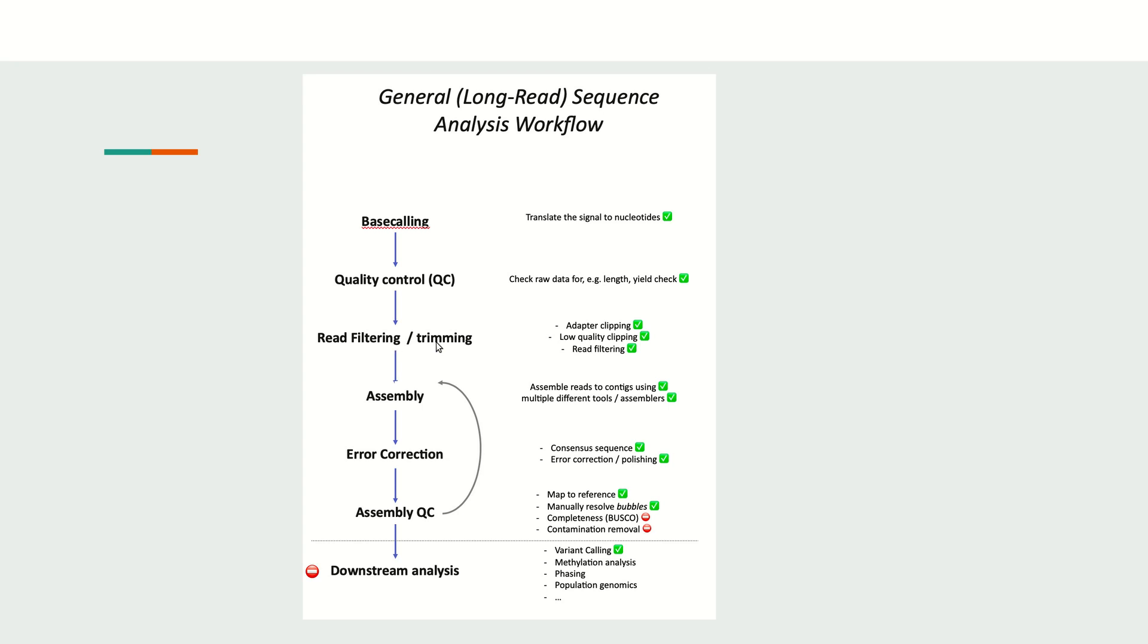If there are some low-quality reads, we filter them out. If there are some low-quality regions or bases, we trim them. Also, if there is some adapter contamination, we need to trim them out. This sanity check is required before doing the assembly, so once we have clean, processed data, we can proceed.